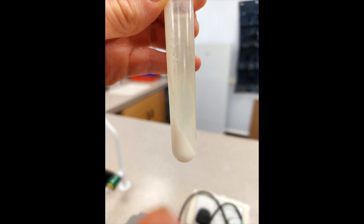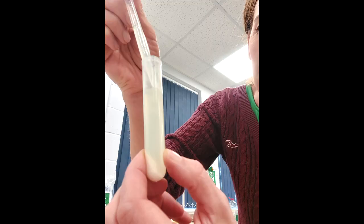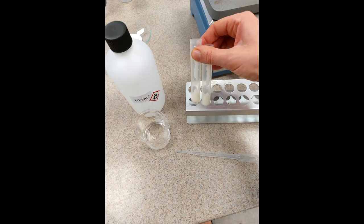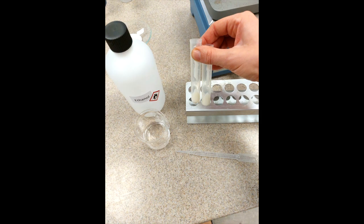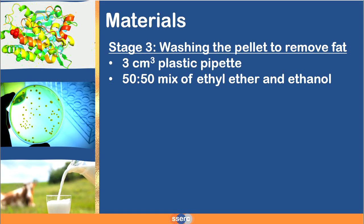You're now going to remove the supernatant that contains lots of molecules that we don't need. We want that pellet at the bottom, but the pellet will also contain fat molecules that have adhered to that casein protein. So we now need to move on to the fourth stage to remove as much of that fat as you can.